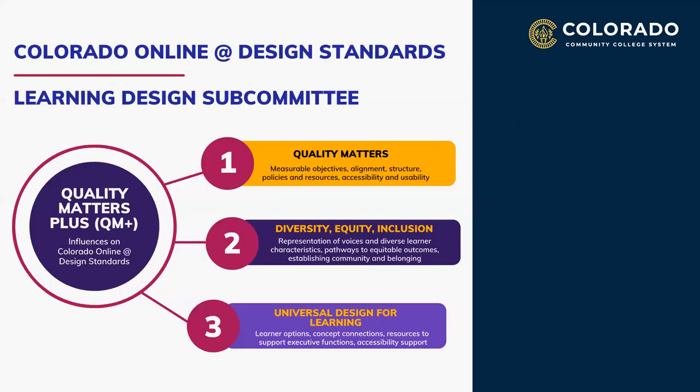The CCCS online course quality standards are referred to as QM Plus because, after our review of various rubrics and frameworks, we decided to set the Quality Matters Sixth Edition as our foundation and expand the set of standards to address gaps we found through resources that included UDL and the Peralta Online Equity Rubric. Each influence adds an important perspective. The QM Rubric gives us essential concepts, including measurable objectives, alignment, course structure, policies and resources, accessibility, and usability.